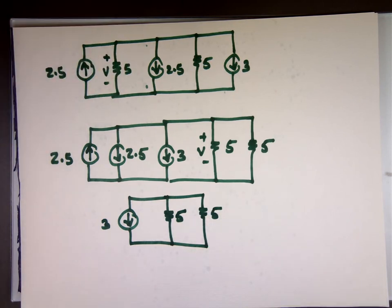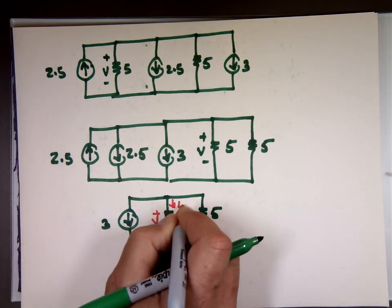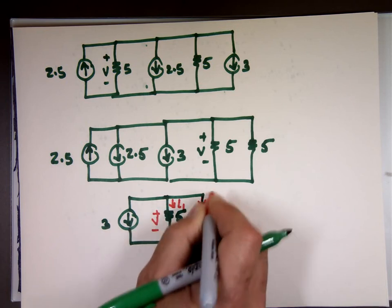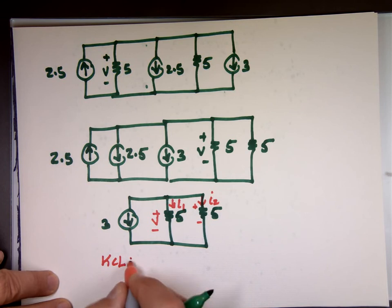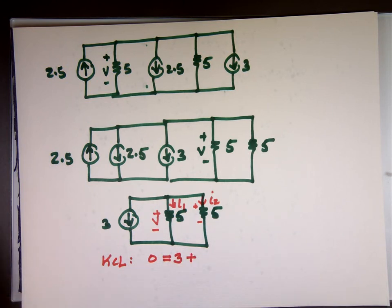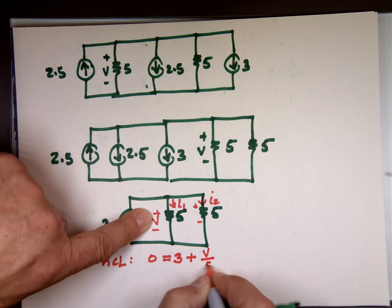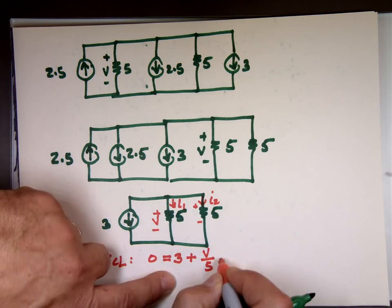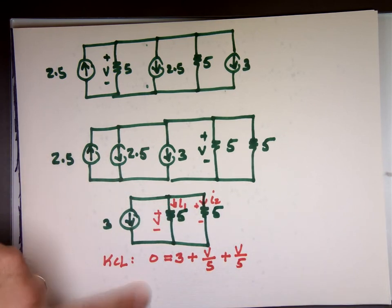And I define V like this, plus to minus V. So it makes sense if I define I sub 1 coming down this way and I sub 2 coming down this way because that will be plus to minus. I can do KCL here. The current going to the top which is 0 equals the current leaving. What's leaving? 3 amps plus I sub 1. What is I sub 1? How do you write I sub 1? V over 5. This voltage divided by that resistor. Plus I sub 2 which is V over 5.